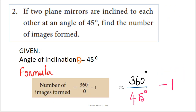Next question: if two plane mirrors are inclined to each other at an angle of 45 degrees, find the number of images formed. Given: the angle of inclination (theta) is 45 degrees.